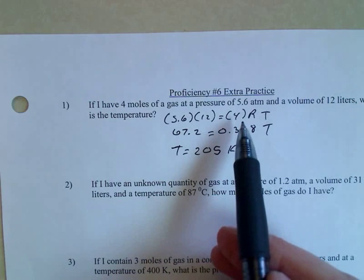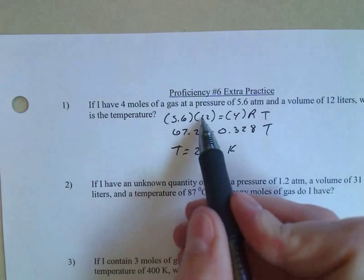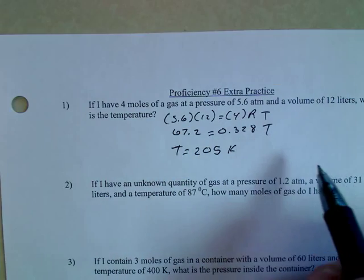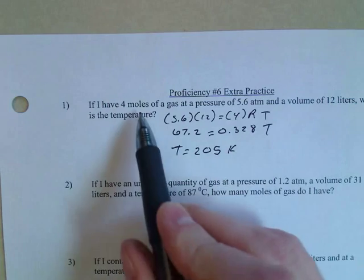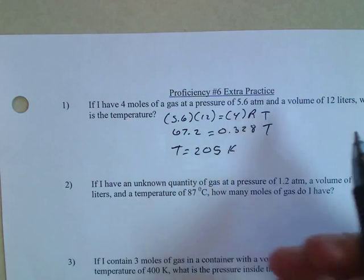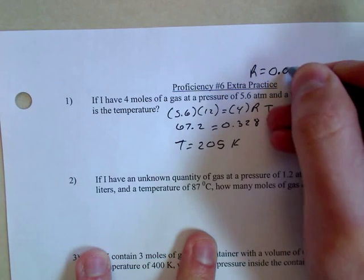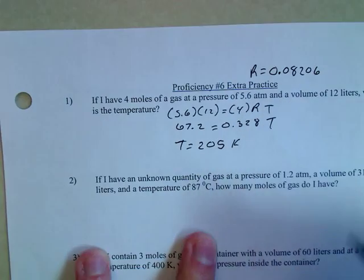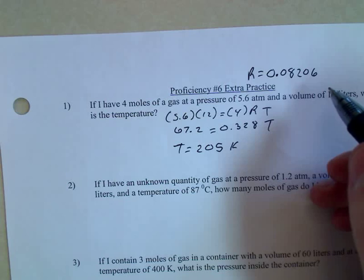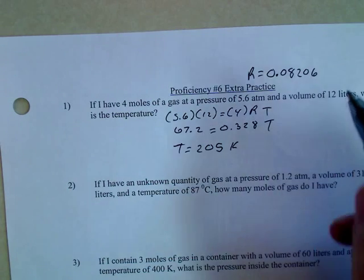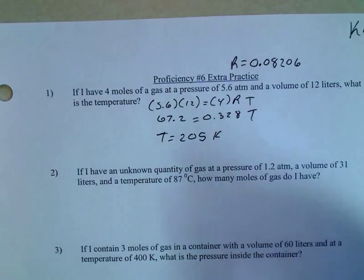Four moles of gas at 5.6 atmospheres of pressure, volume of 12 liters, what's the temperature? So we use PV equals nRT. The pressure was 5.6, volume was 12 liters, number of moles is 4, R is a constant. Remember, R in our instance, the way we're using it, is always 0.08206. That's when you're using liters and atmospheres and Kelvin. So you do the math and you get 205 Kelvin.